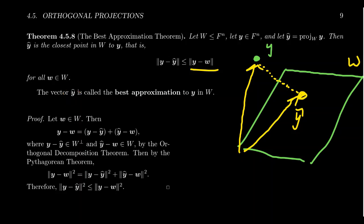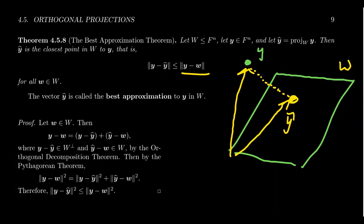And the proof is pretty slick. It's a quick application of the orthogonal decomposition theorem we saw in the previous video. So take any vector little w inside of W. Then we're going to take a look at the difference between y and w. We want to show that the length of this vector is bigger than y minus y-hat, the orthogonal projection of y into W.